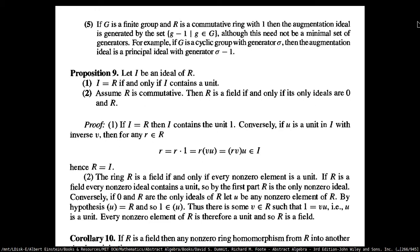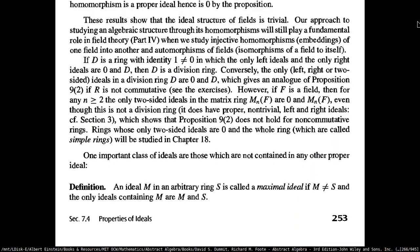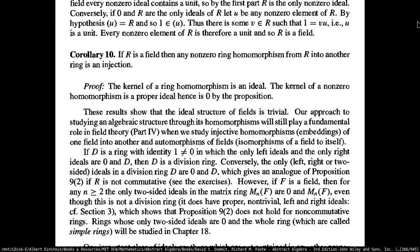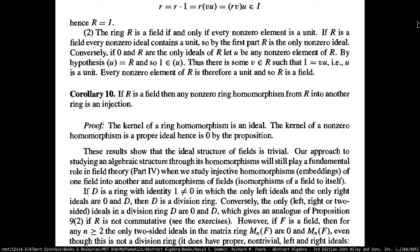I'm not going to go through this proof because it's already a problem in the pset. One of the corollaries you can get from this is that if R is a field, then any non-zero ring homomorphism from R into any other ring is going to be an injection. This is partly the answer to the second question of problem nine in the pset — how to consider homomorphisms between fields. The kernel of a ring homomorphism is an ideal, so the kernel of a non-zero homomorphism is going to be a proper ideal.